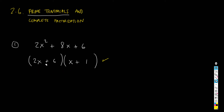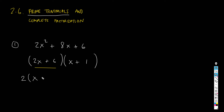This is a perfectly good factorization — you've fulfilled the requirement to factorize the trinomial. However, this is not what we know as a complete factorization. Even though it is a valid factorization, it is not complete. Why not? Because if you observe, this first binomial can be further factorized: its two terms share a common factor of 2, so it can be written as 2 times (x plus 3).